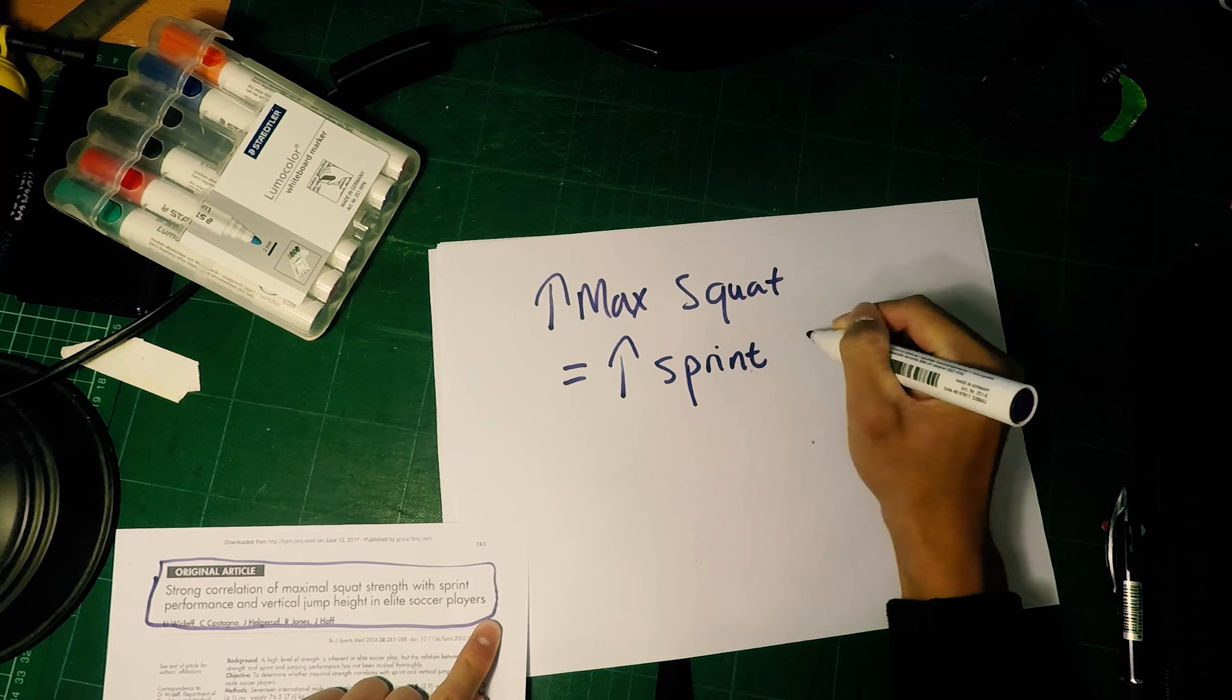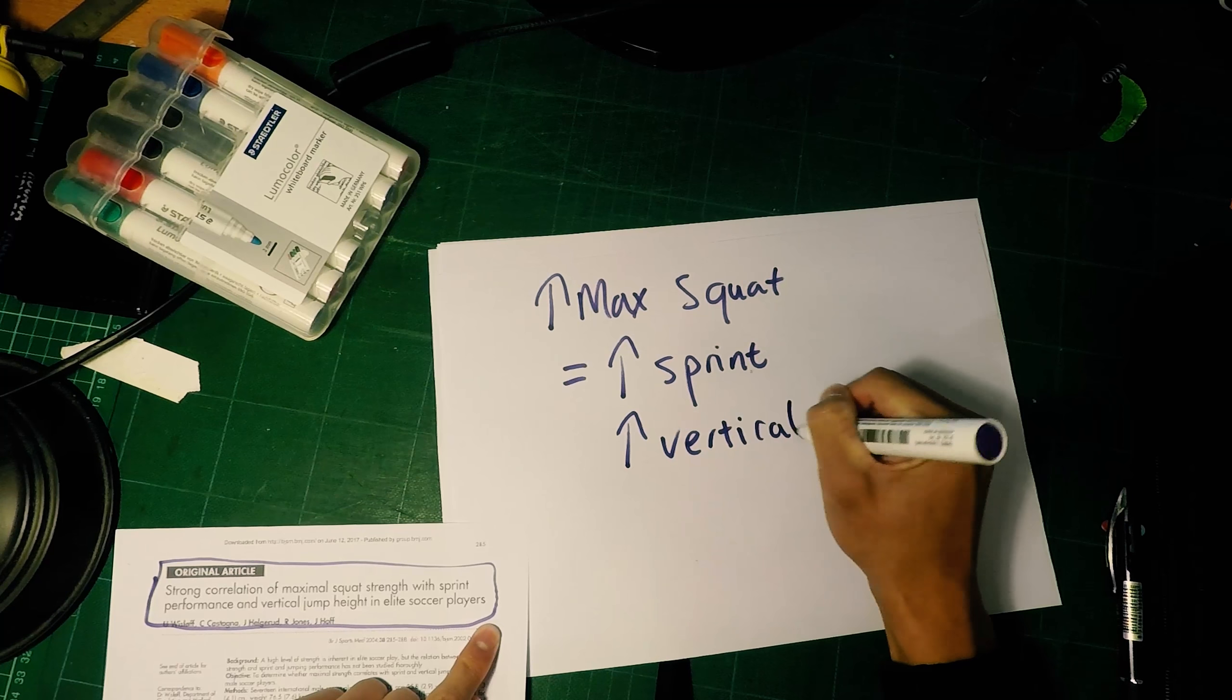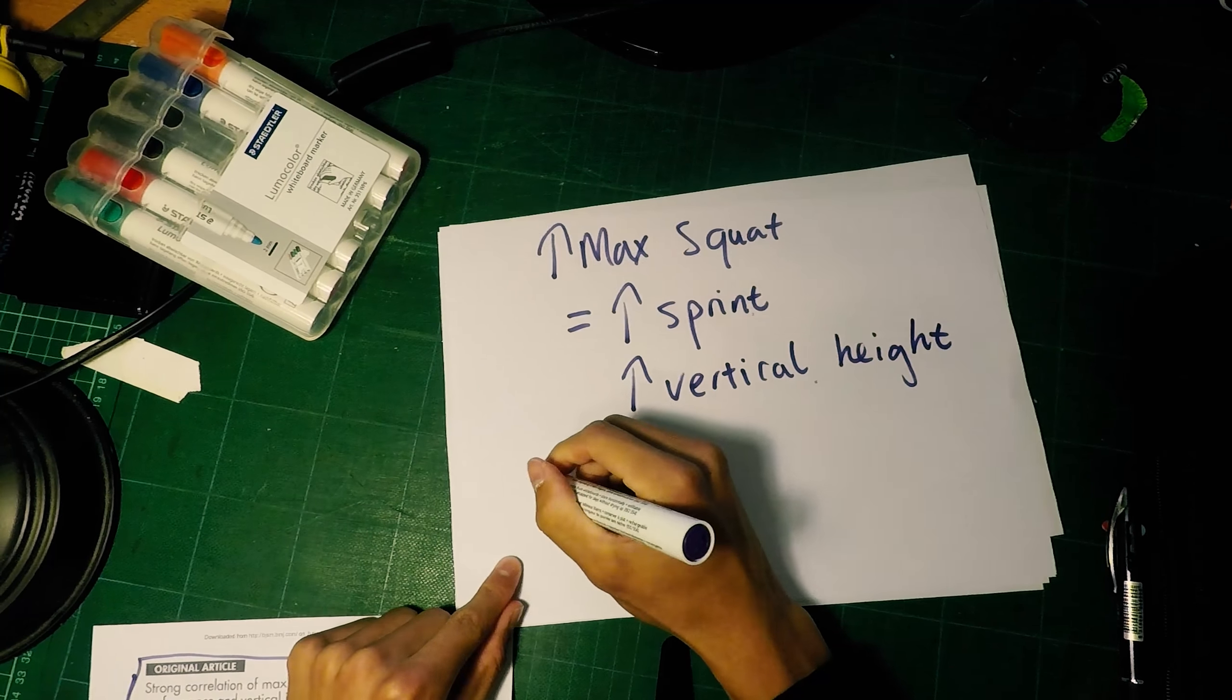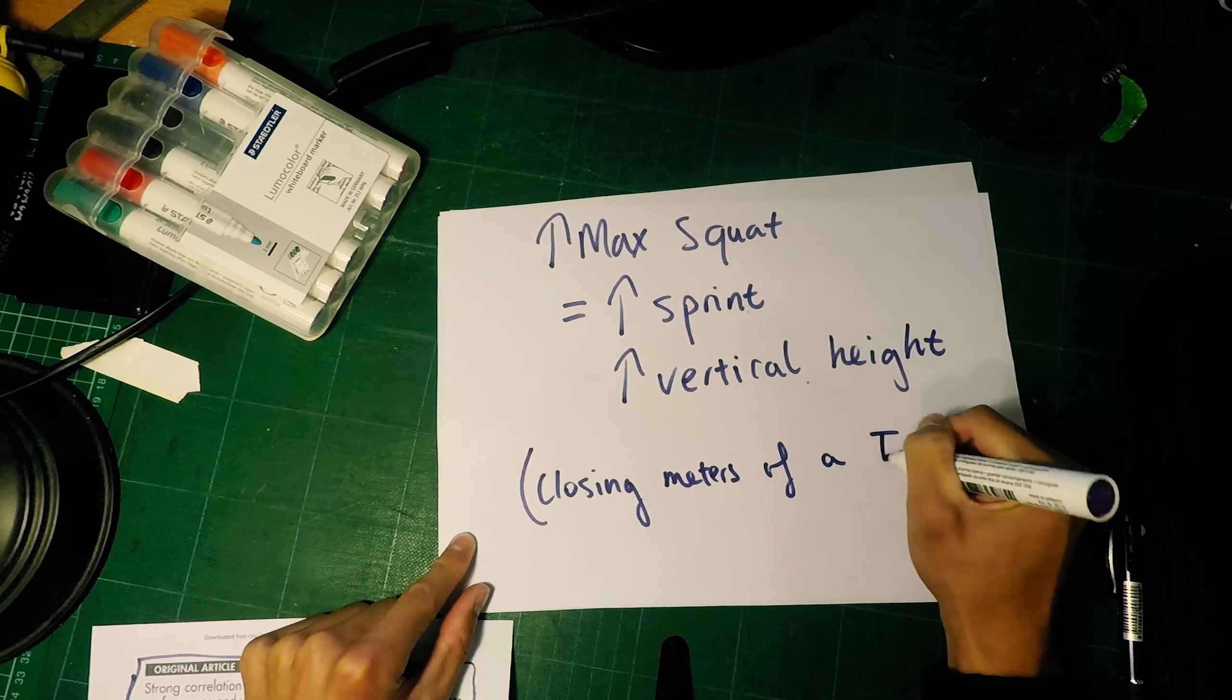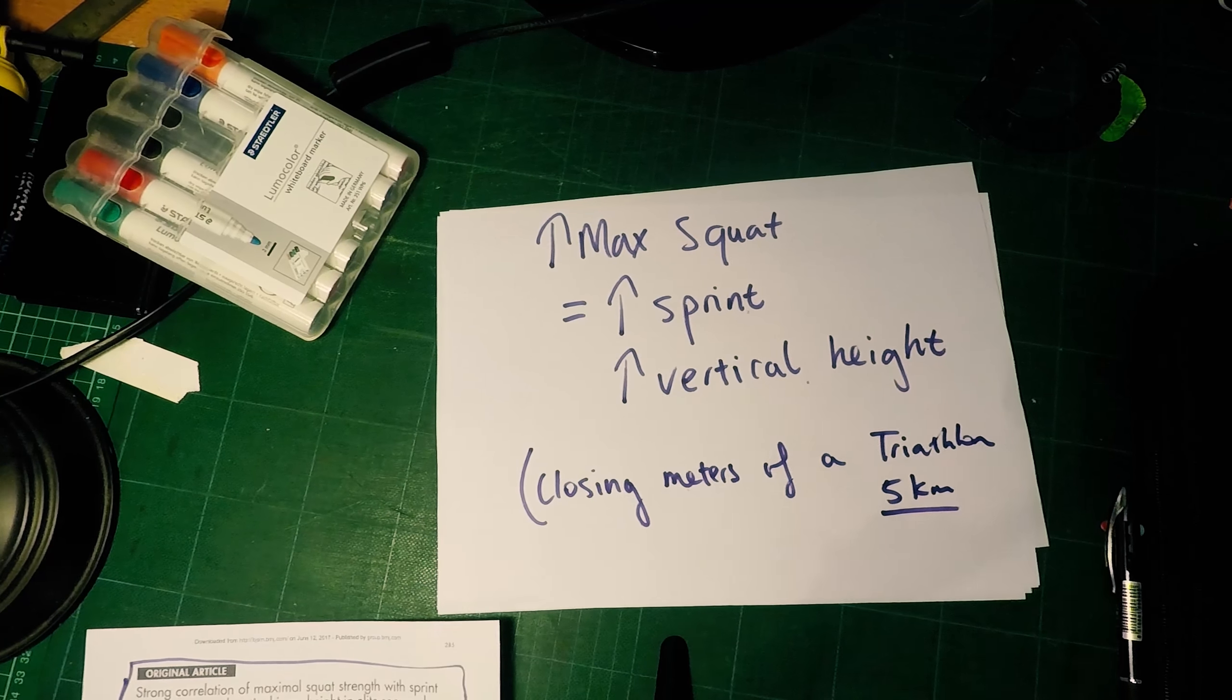And you know how I said before that strength training only marginally affects times? Well, this study shows that increased max squat means increased sprint and increased vertical height. And who knows, that could win your race in the closing meters of a triathlon, a 5K, or getting into that breakaway in a cycling race.